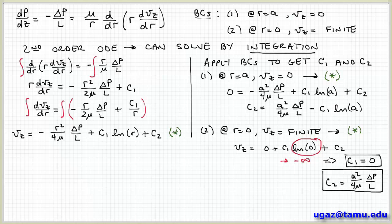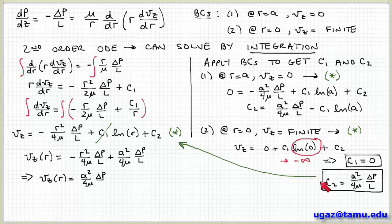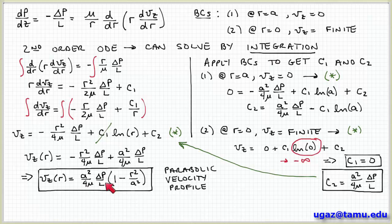Now we can substitute c1 and c2 back into equation star to get the velocity profile. This is finally the solution: vz as a function of r equals minus r squared over 4mu times delta p over L, plus a squared over 4mu times delta p over L (which is c2). Collecting terms, we get the boxed expression: a squared over 4mu times delta p over L, multiplied by the quantity 1 minus r squared over a squared. This is the parabolic velocity profile inside the pipe — it depends on r squared.